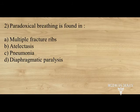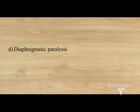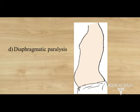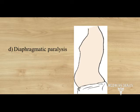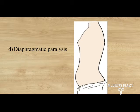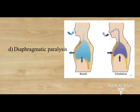Paradoxical breathing is found in: option A. multiple fracture ribs, option B. atelectasis, option C. pneumonia, option D. diaphragmatic paralysis. Answer: option D, diaphragmatic paralysis. During normal inspiration the diaphragm moves downward, but in the case of paralysis of the diaphragm, when the intrathoracic pressure decreases during inspiration, the paralyzed diaphragm moves paradoxically.